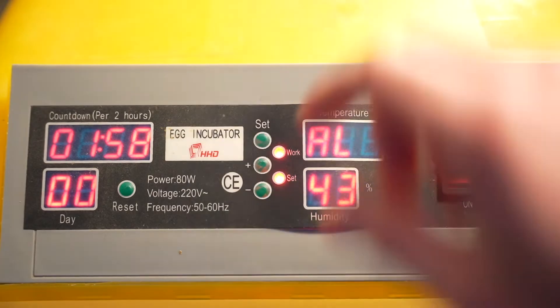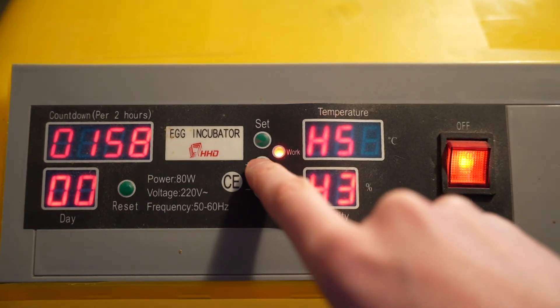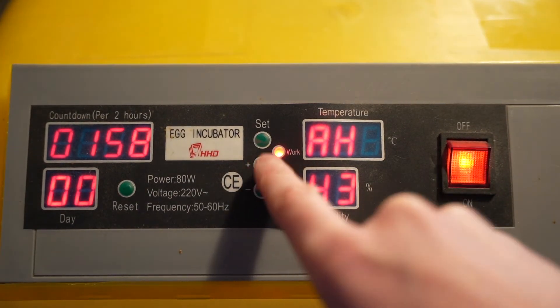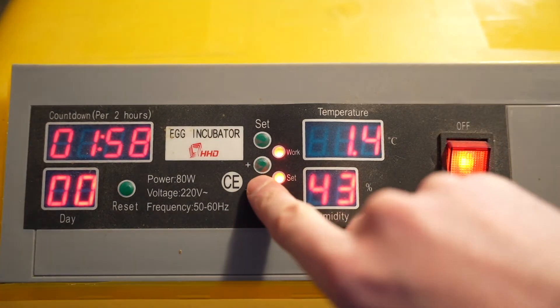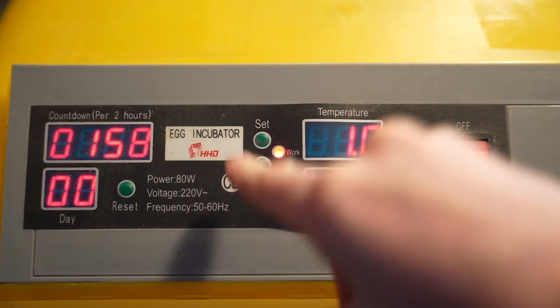And now we can do the same thing for too high temperatures. Press the set button again and now we can adjust it by pressing the minus to one degree.